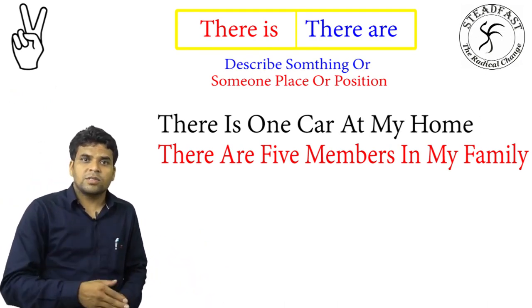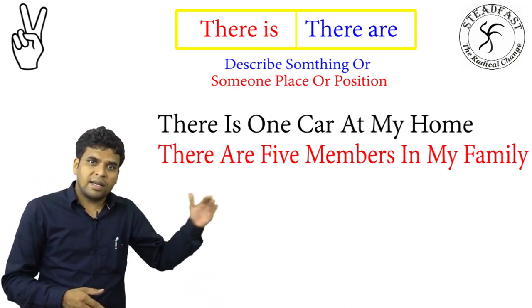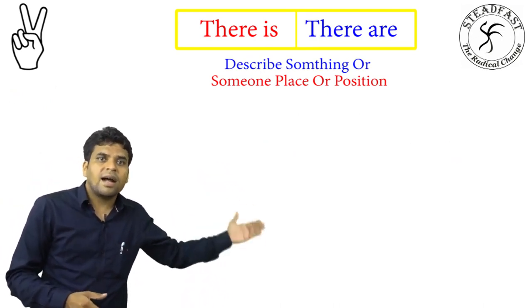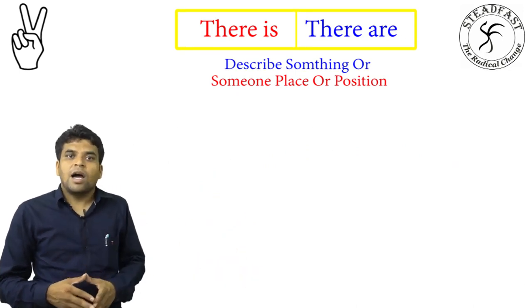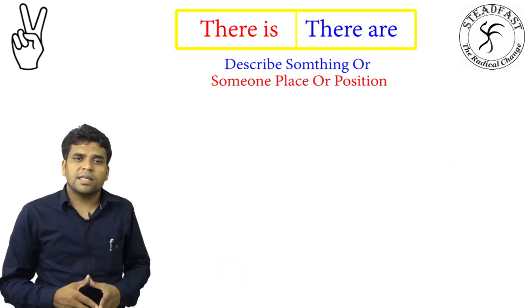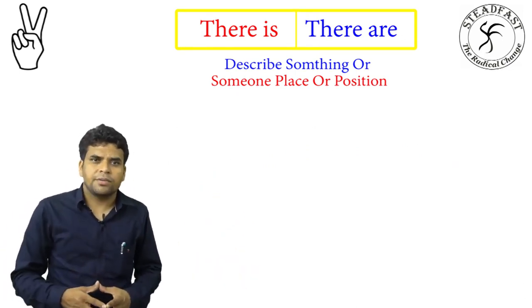There are five members in my family. So this is the positive sentence. There is and there are — positive form.